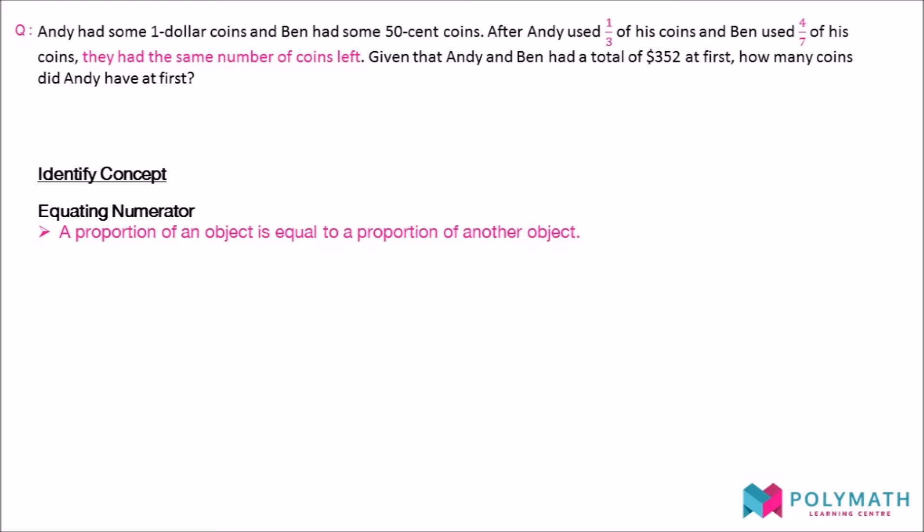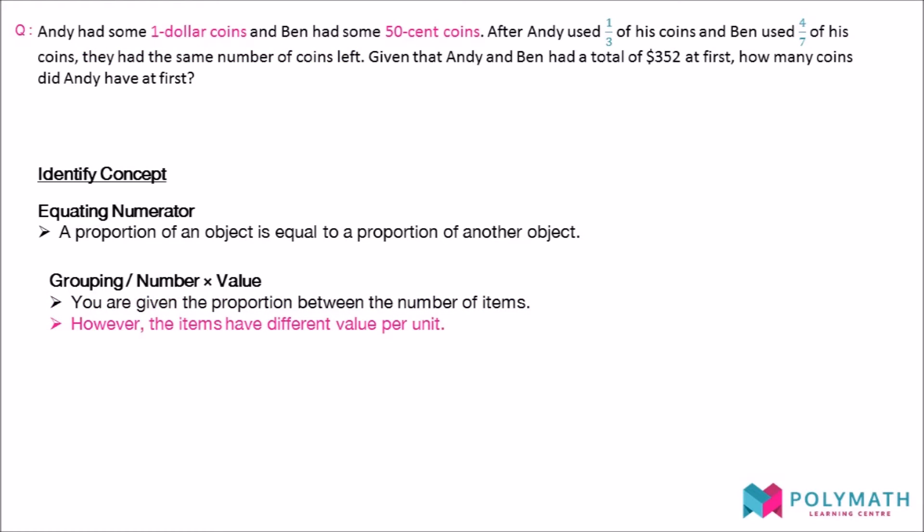In the grouping question, you are given the proportion between the number of two or more items. However, the items have different values each. Thus, the proportion between the total value of the items will be different from the proportion between the number of items.